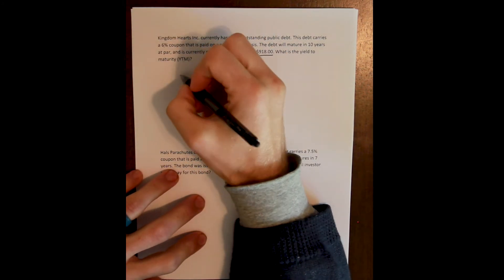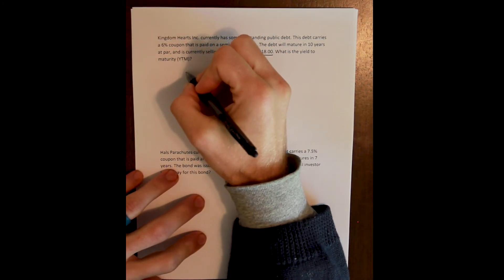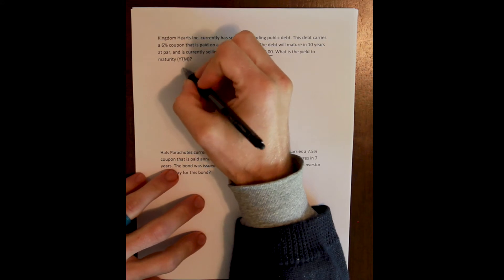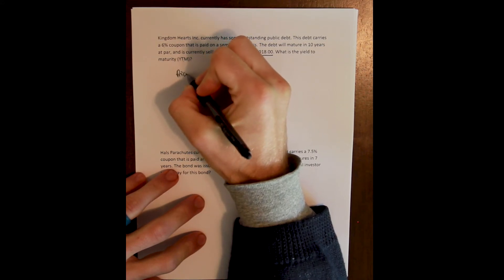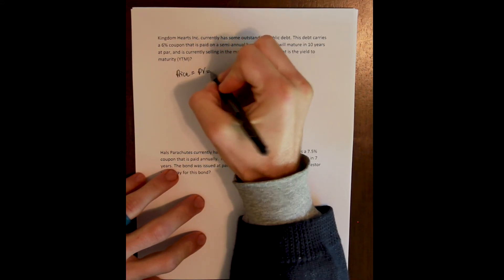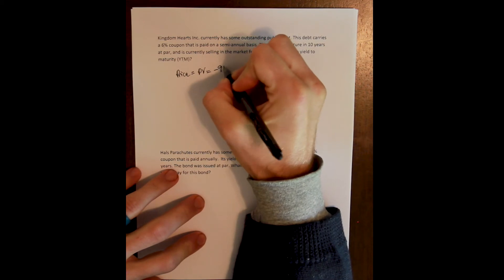And we can figure out what that rate is by plugging everything in and solving for the yield to maturity. So the price is the present value, and the present value of the bond is $918.